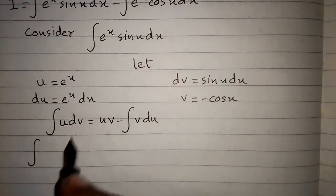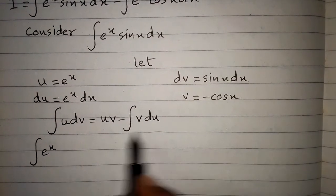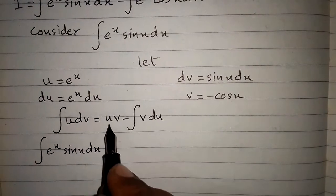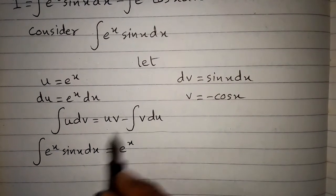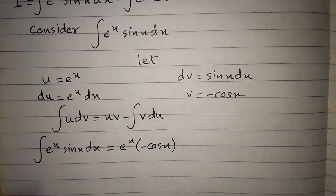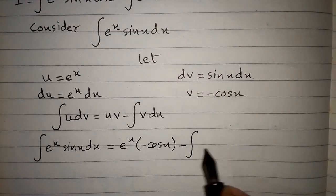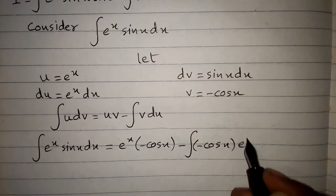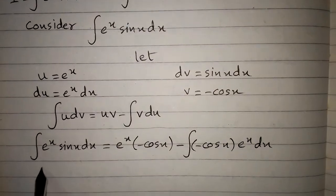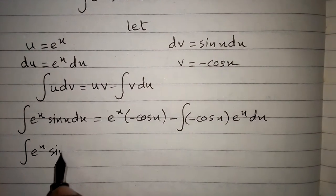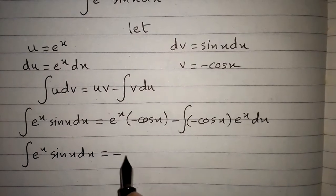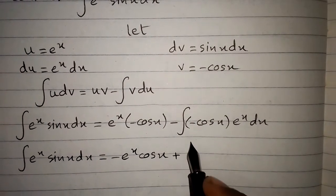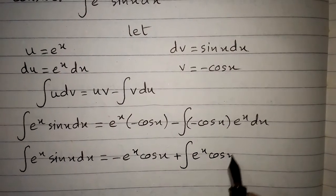We substitute the values: u is e to the power x, dv is sin x dx, du is e to the power x dx, and v is minus cos x. Applying the formula, integral of e to the power x sin x dx equals minus e to the power x cos x, then minus times minus gives plus, so plus integral of e to the power x cos x dx.